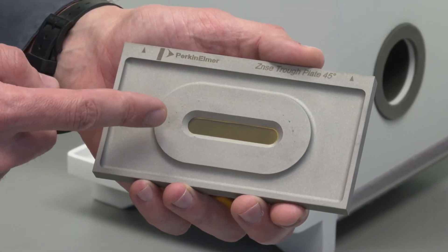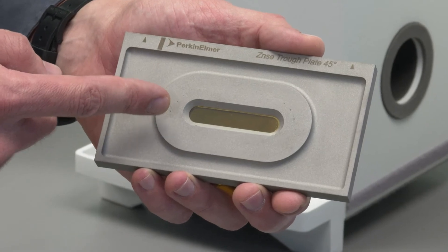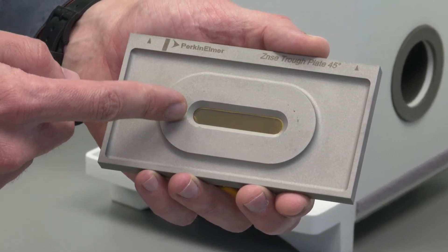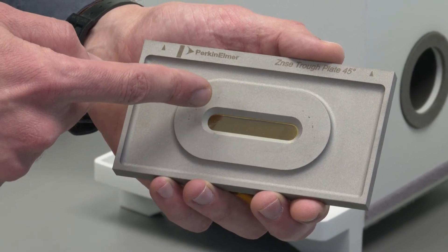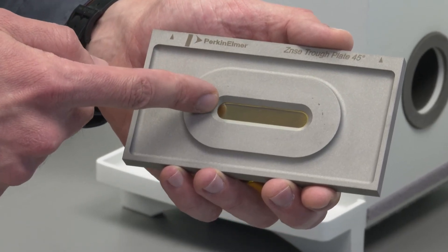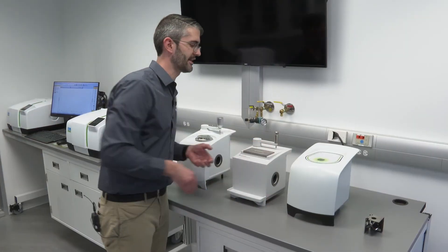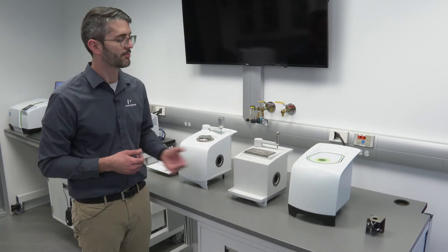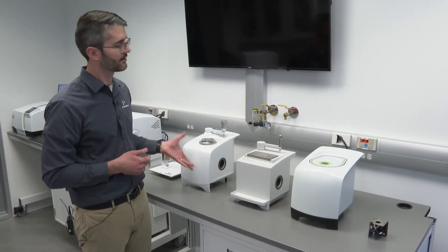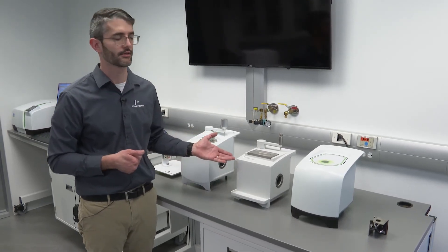Looking at the top plate here, you can see that the area of the measurement is much larger. A slightly higher volume of sample is required, and sometimes cleanup may be a challenge. These are several factors which affect the decision in selection of sampling accessory between a single-reflection ATR, multiple-reflection ATR, or horizontal ATR.